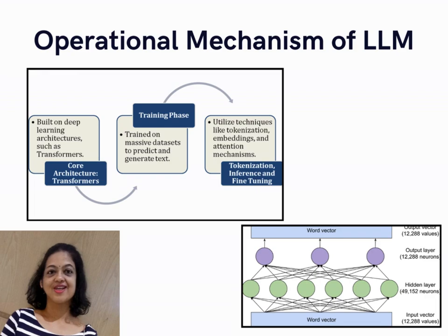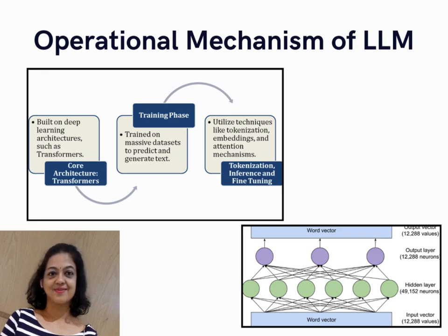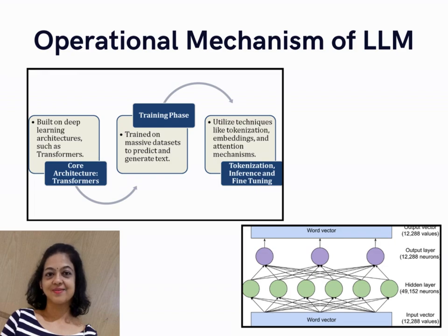The final output is another word vector of 12,288 values, which can be used for downstream tasks such as predicting the next word, classifying text, or computing word similarity and semantic relationships. A word or token is encoded as a vector and fed into the input layer. The word vector is processed through the hidden layer using an activation function — e.g., ReLU or sigmoid — to capture nonlinear patterns. The weights are adjusted during training to minimize the loss. The output layer then transforms the hidden layer's representation into the desired output format.